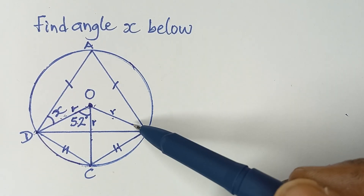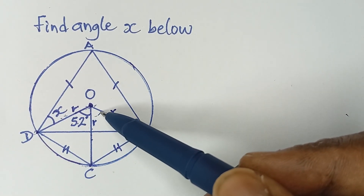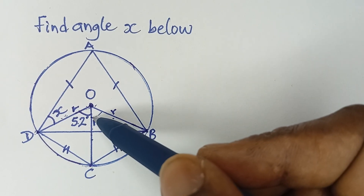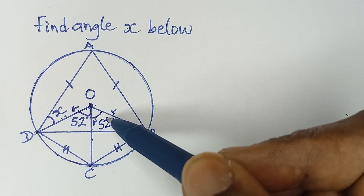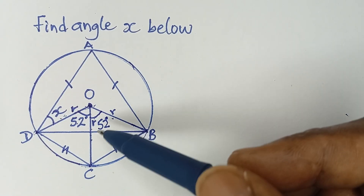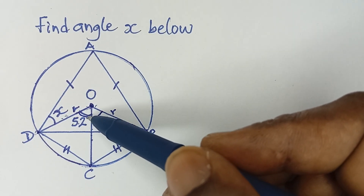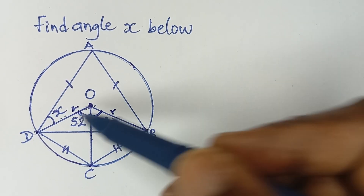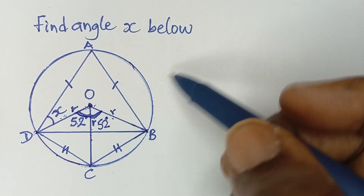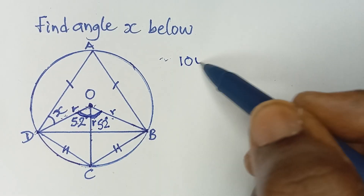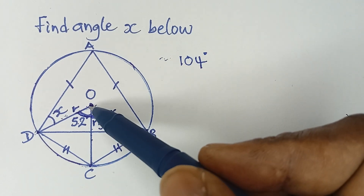These two triangles have their two vertical sides equal and their base side also equal, so the two triangles are exactly equal — all three corresponding sides are equal. That means all their corresponding angles are equal. So if this angle is 52°, this one is also 52°. Therefore, the angle at the center is 52 + 52 = 104 degrees.